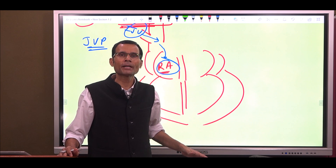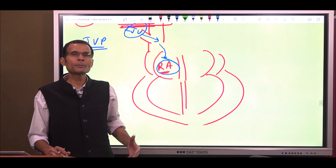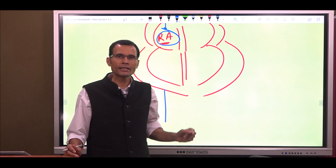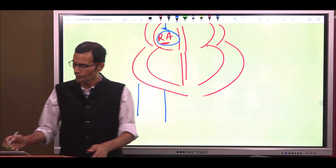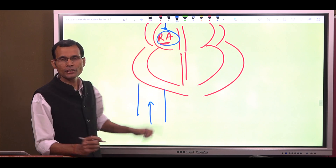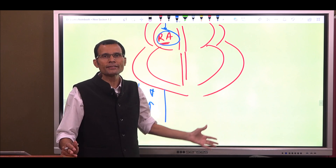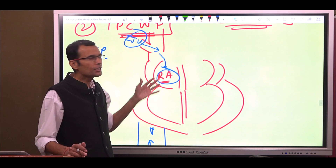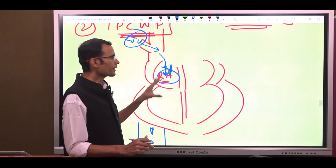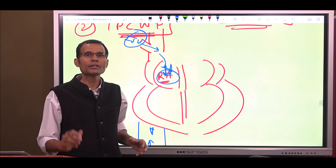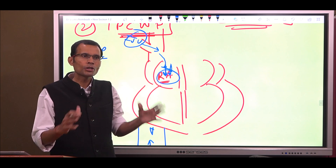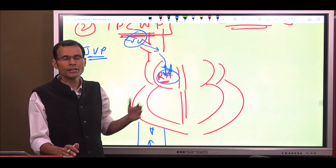This is an indirect measurement. If you want to measure the pressure directly, insert a catheter with a balloon at the tip into a vein and advance it further and further — all veins lead to the right side of the heart, so the catheter will reach the right atrium. Place the catheter in the right atrium and connect it to a manometer; you can measure right atrial pressure directly.